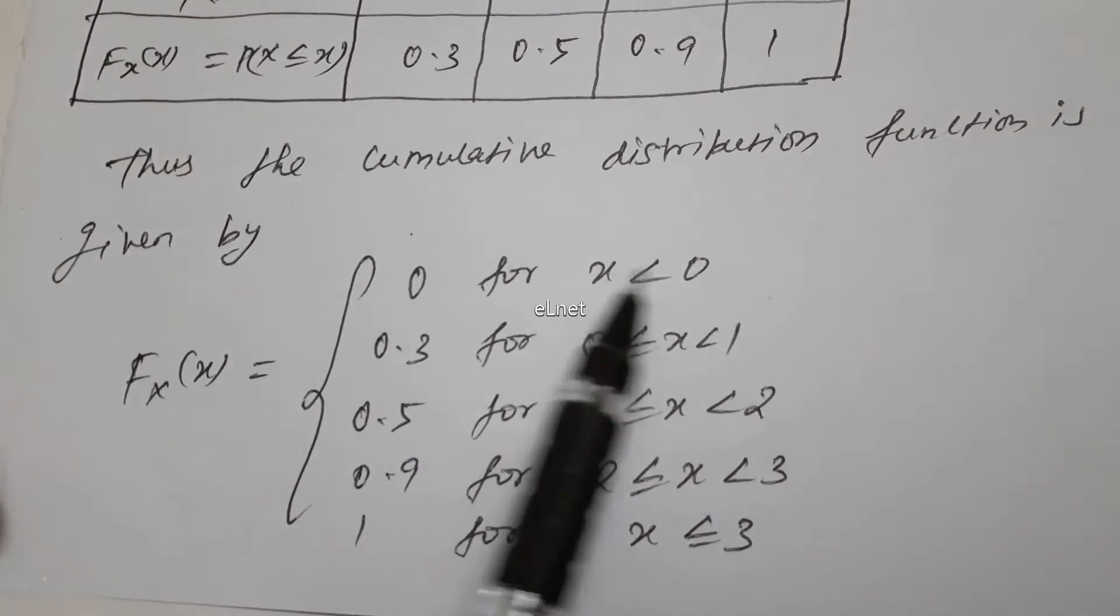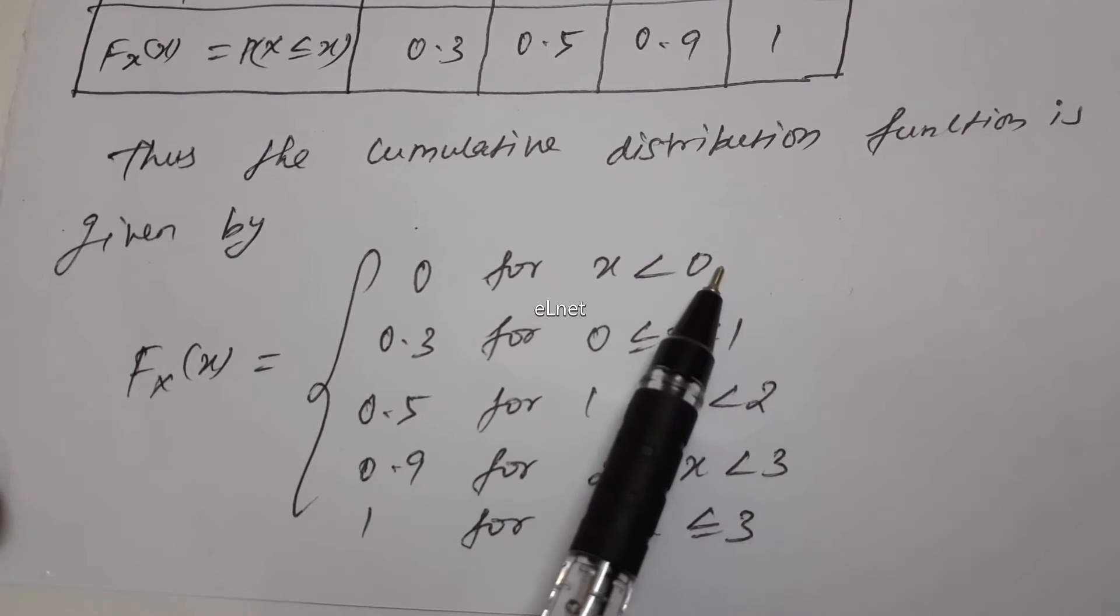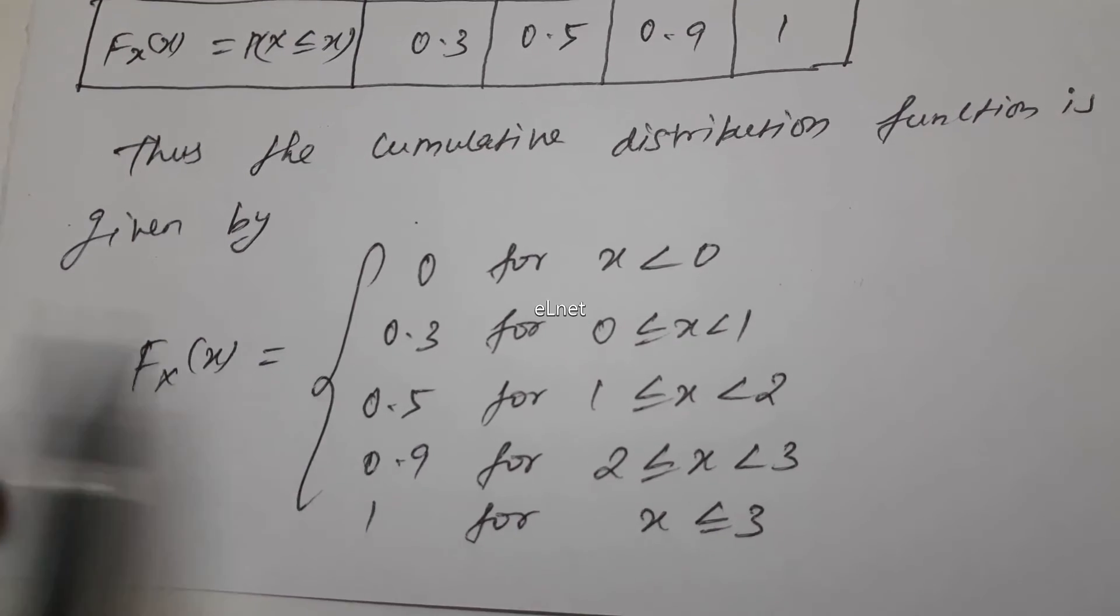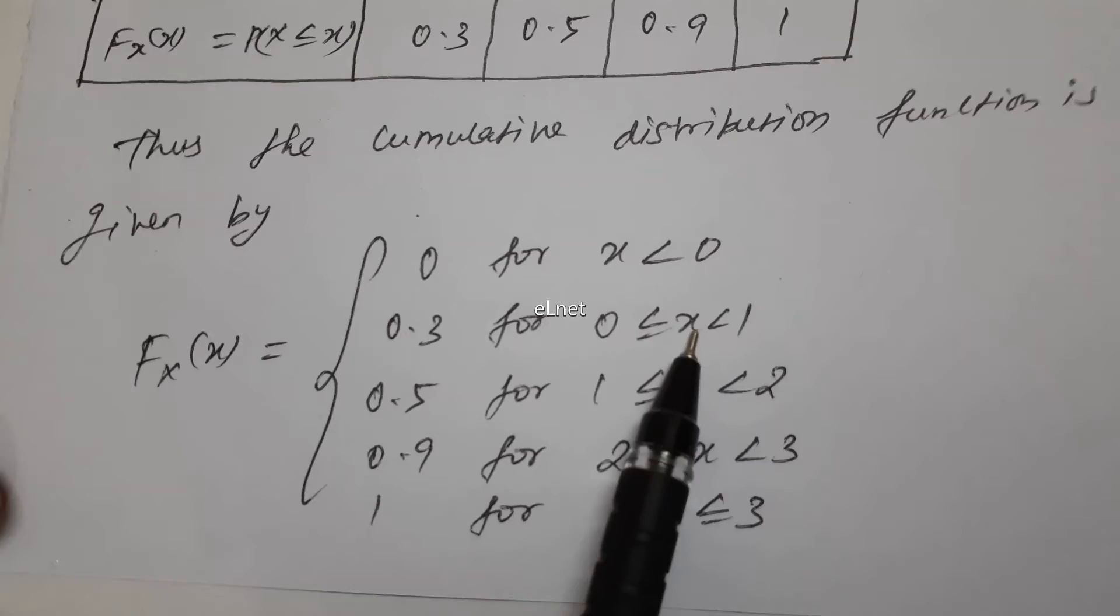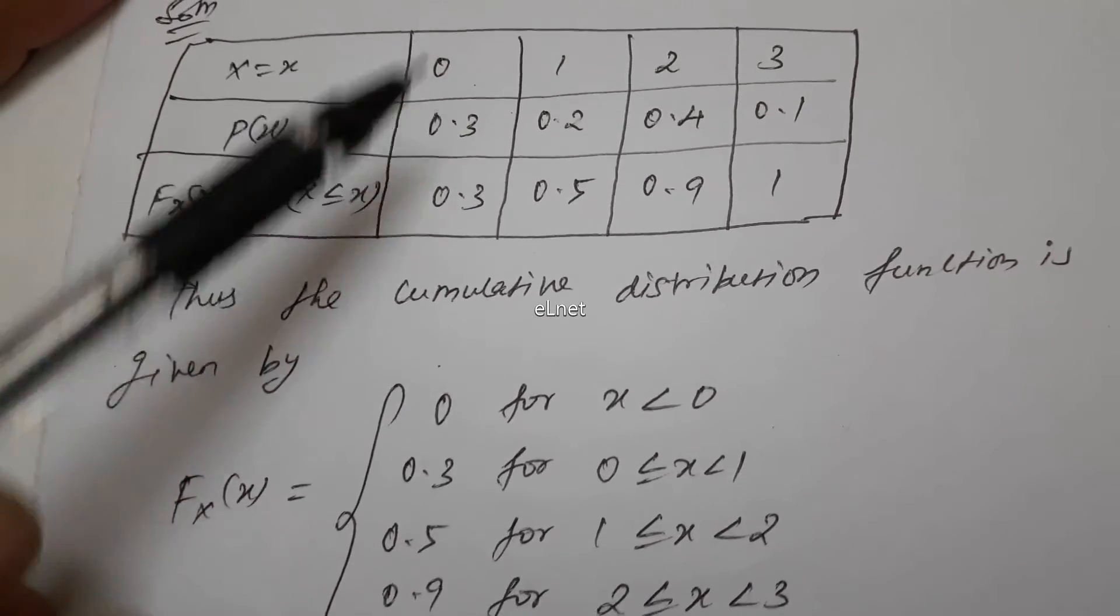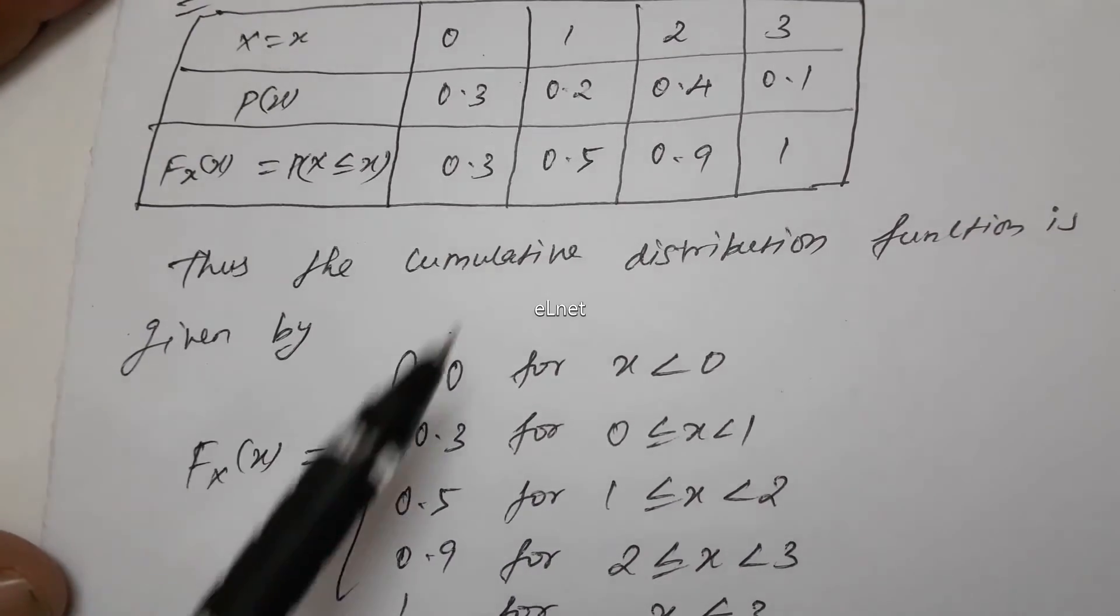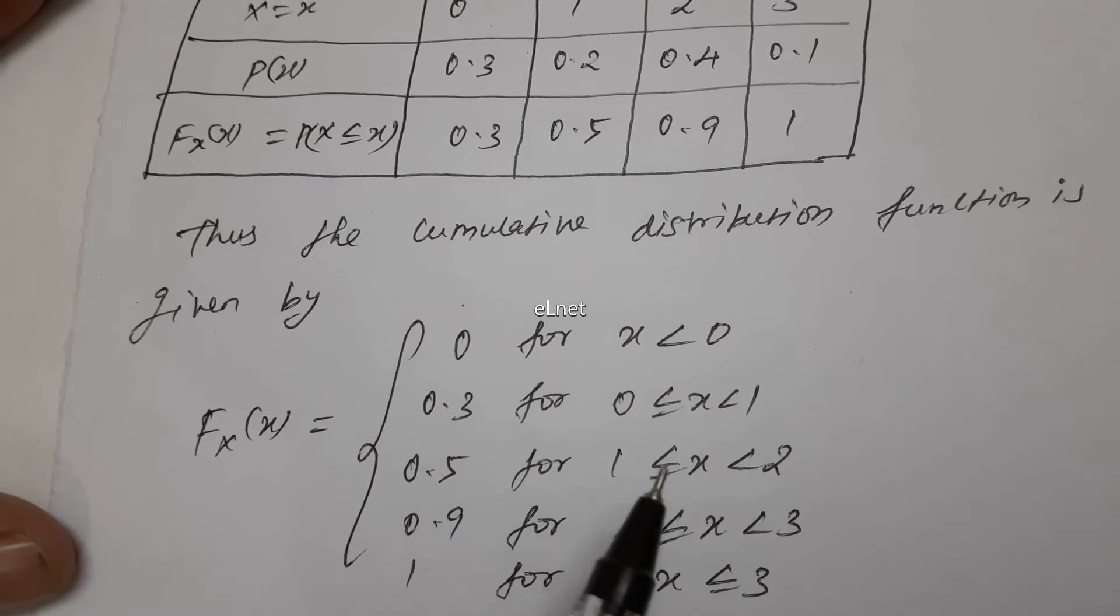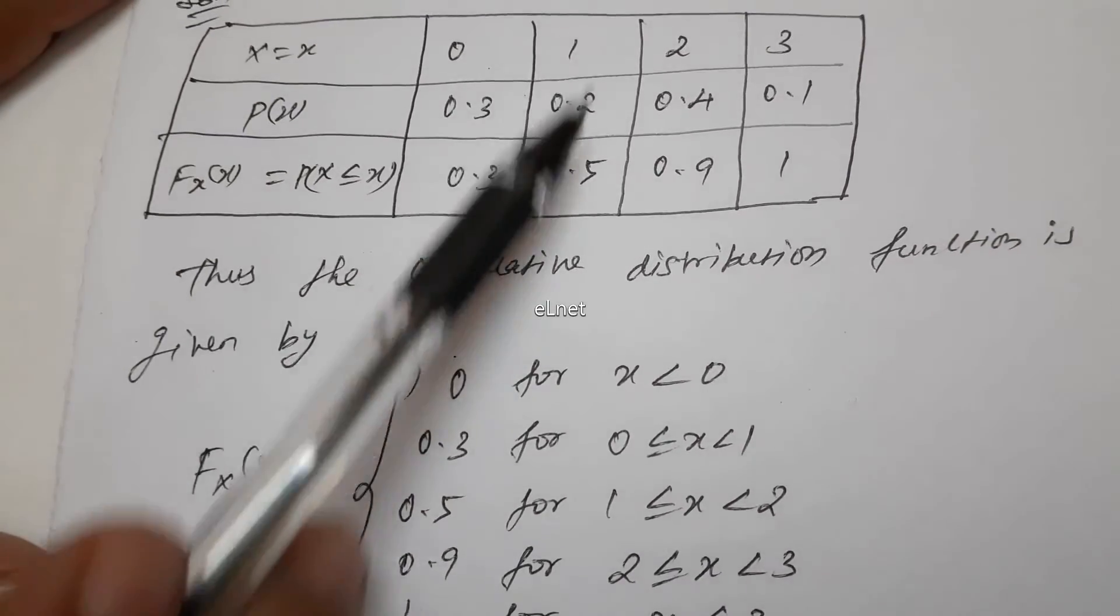0 for x less than 0. For numbers before 0, the answer is 0. Next, 0.3 for 0 less than or equal to x less than 1. Then 0.5 for 1 less than or equal to x less than 2.